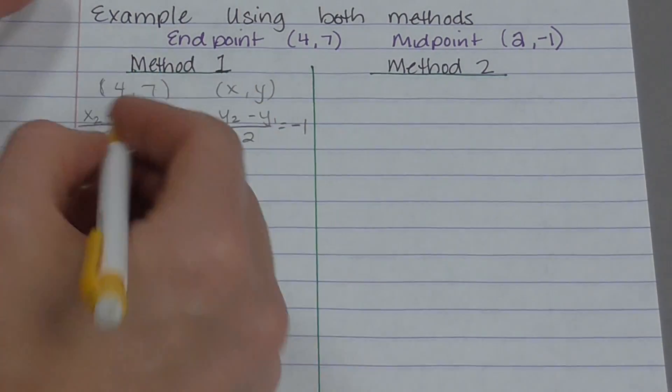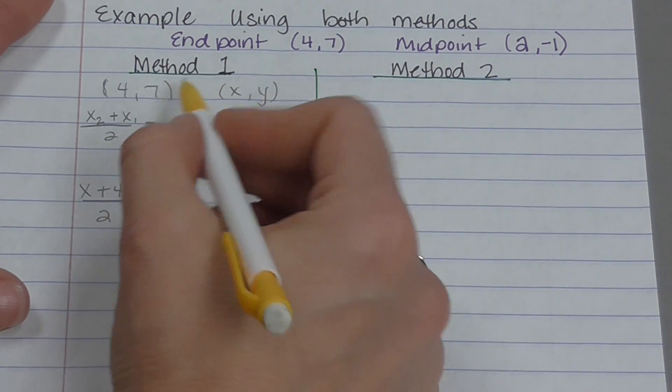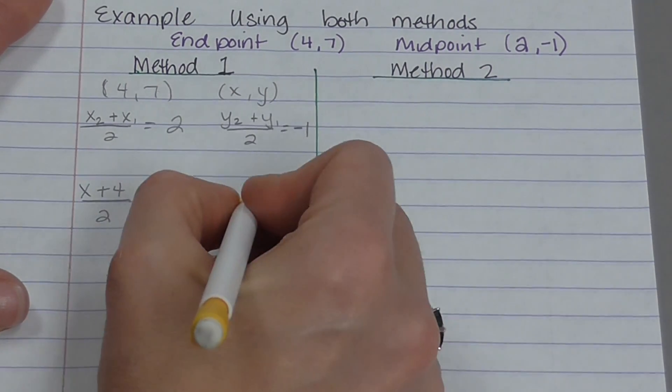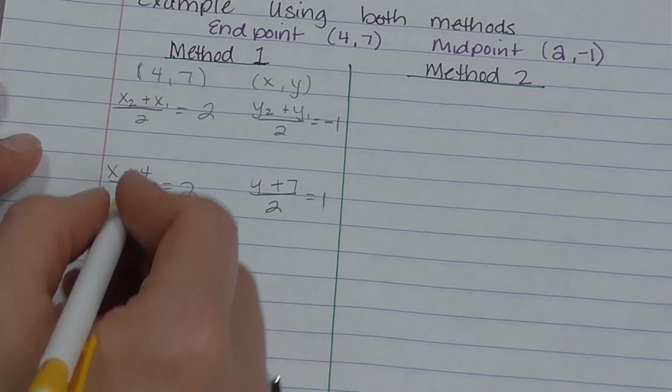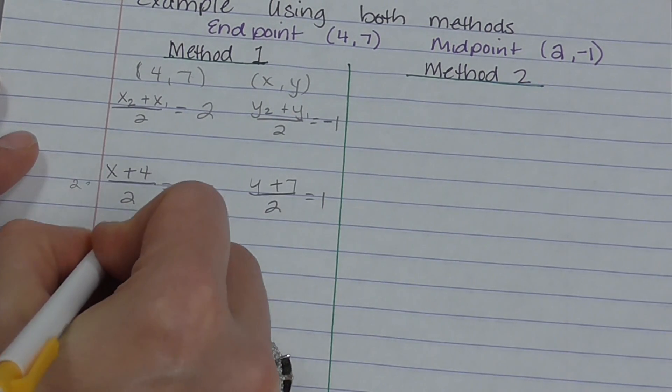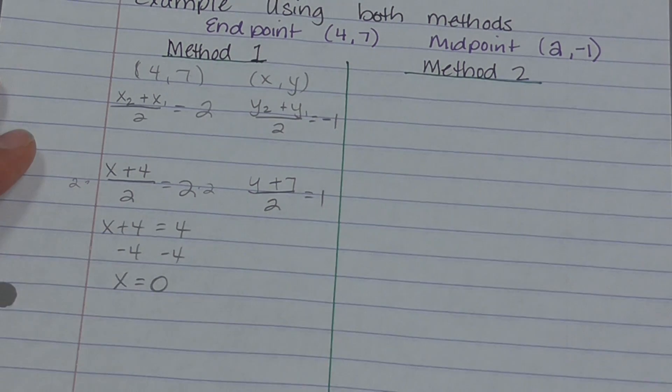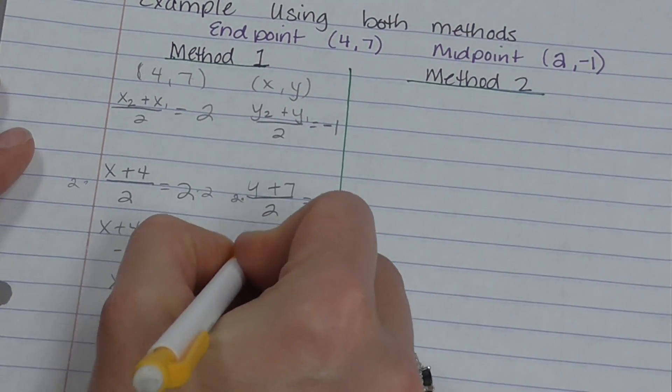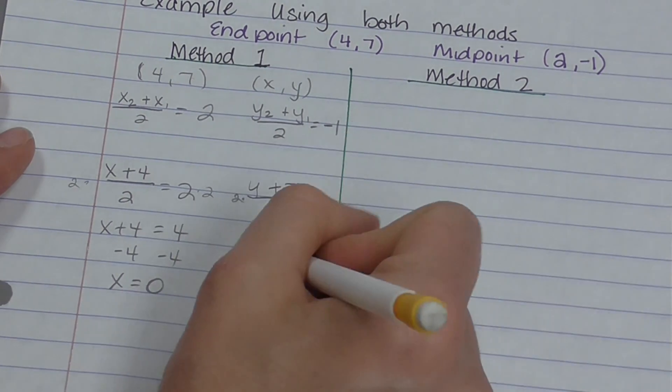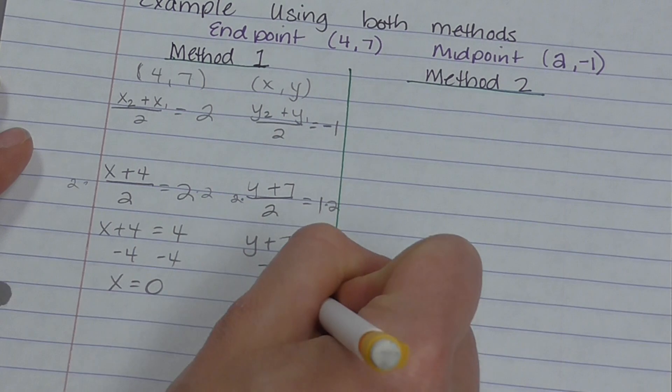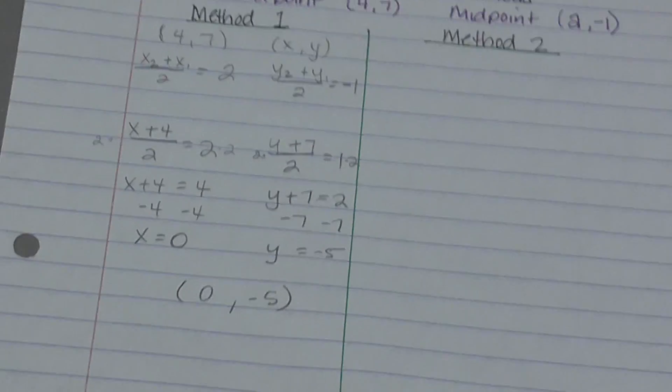Then I'm going to plug in my x's and y's. So I get x plus 4 over 2 equals 2. Plug in my y's. y, this would be a plus, y plus 7 over 2 equals 1. So now I'm just going to solve for x and solve for y. Multiply both sides by 2. I get x plus 4 equals 4. Subtract 4 from both sides. x equals 0. Multiply both sides by 2. And I get y plus 7 equals 2. Subtract 7 from both sides. And I get y equals negative 5. So my other end is the point 0, negative 5. That's the other endpoint.